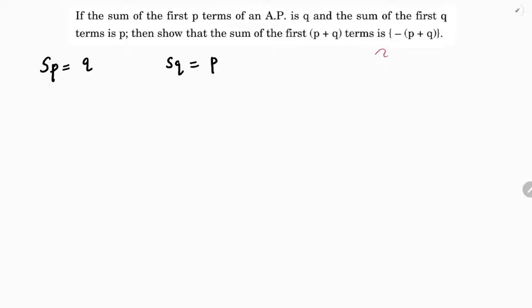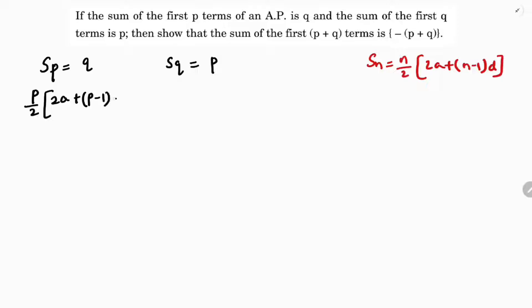The S_N formula is: sum of N terms equals N by 2 into 2A plus N minus 1 into D. So here, S_P, sum of P terms, is P by 2 into 2A plus P minus 1 into D, equals Q. Similarly, S_Q is Q by 2 into 2A plus Q minus 1 into D, equals P.